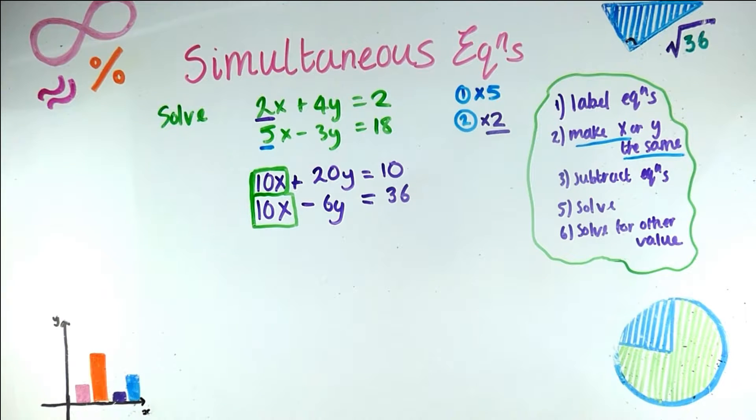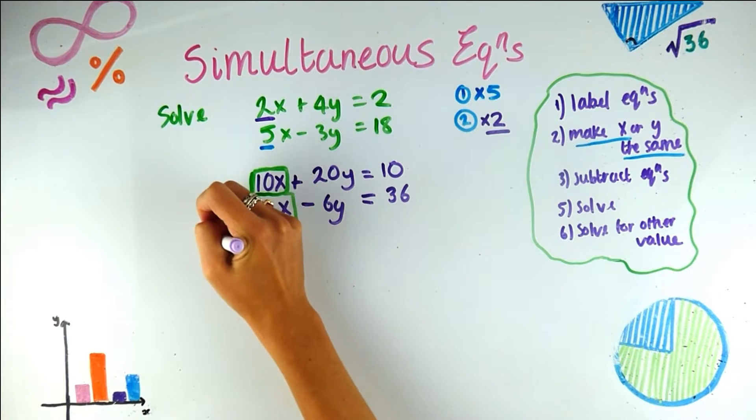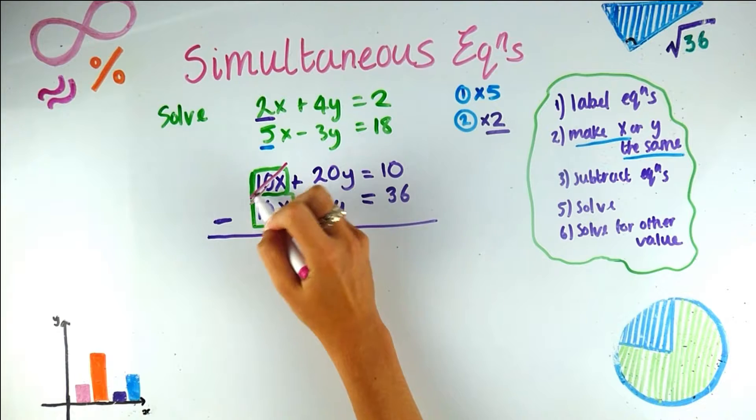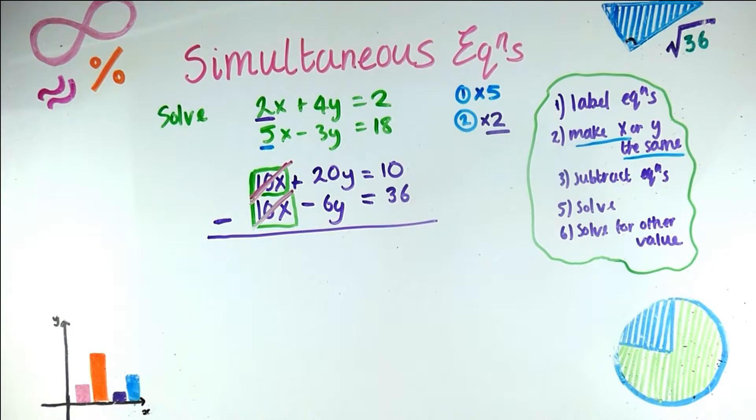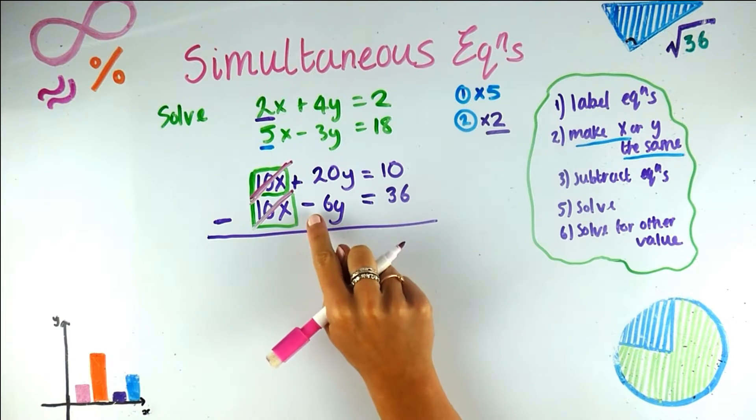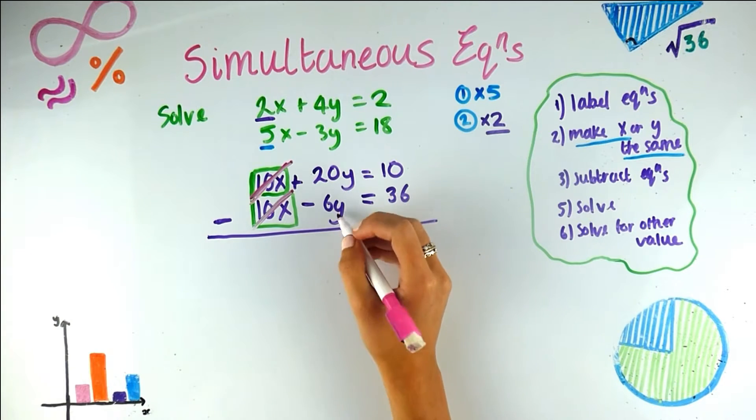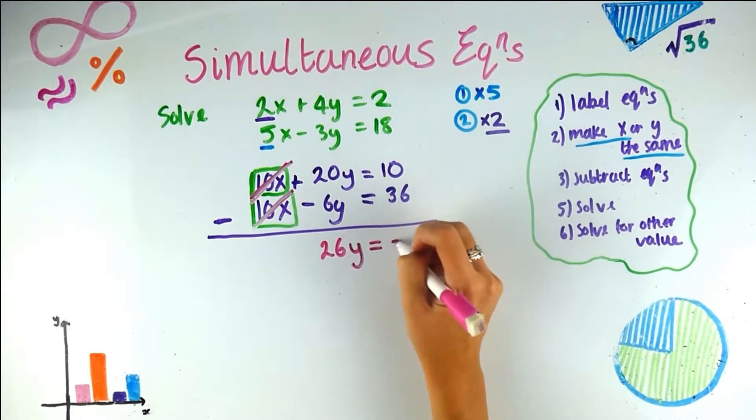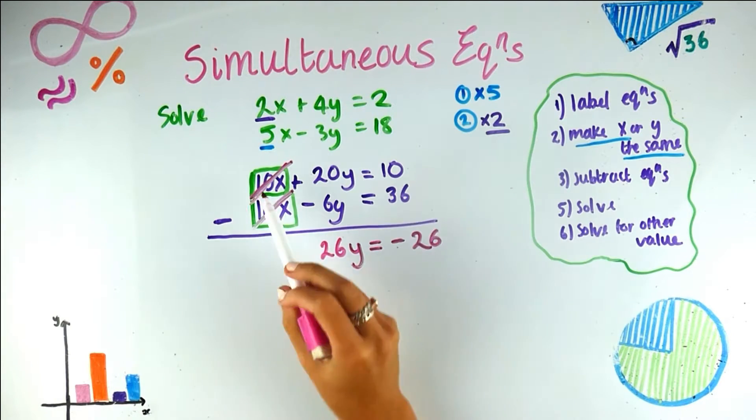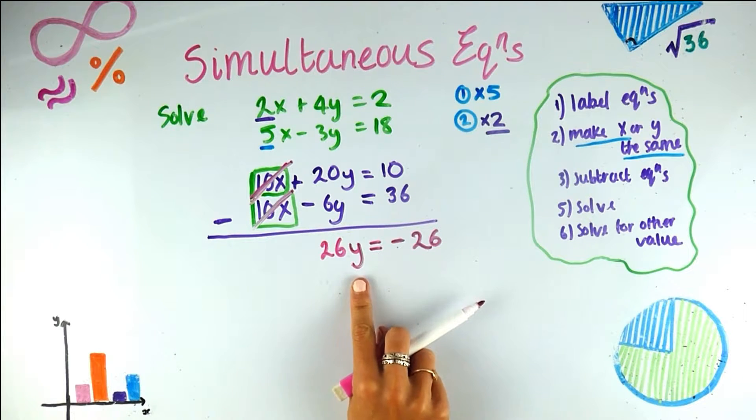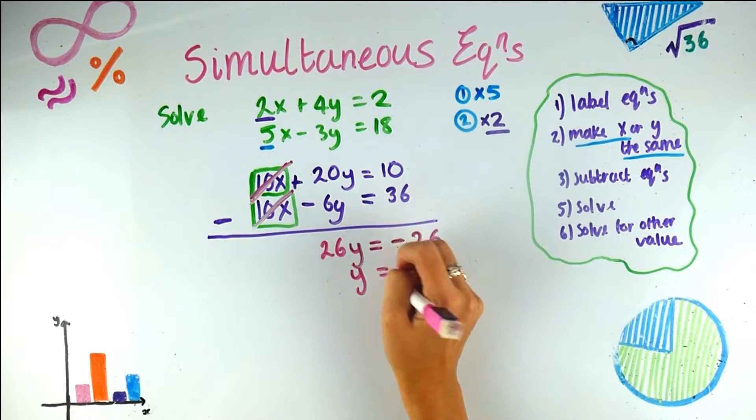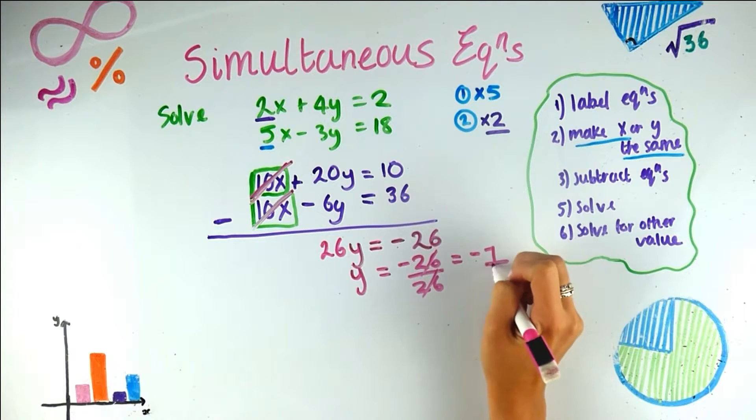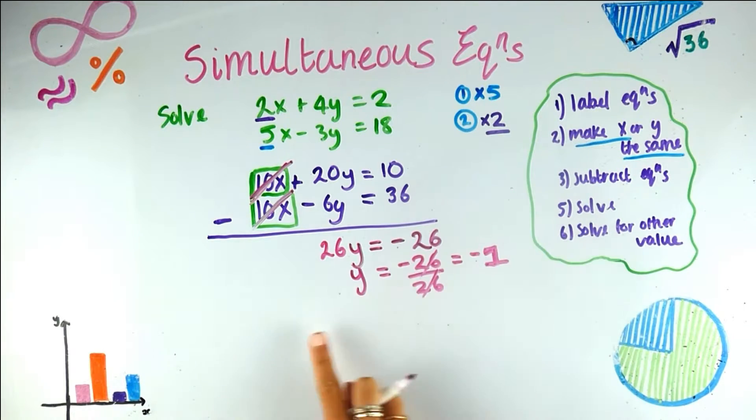Step three, subtract the equations. So we want to subtract these equations. And now you can see the reason we made these x's the same. So if we do 10x minus 10x, they just disappear. And that is the reason for making them the same. We're getting rid of the chance of having an x in our equation. 20y minus minus, so be careful, minus minus 6y. So 20y plus 6y is 26y. Equals, and 10 minus 36 is minus 26. So we made the x's the same. So when we subtract them, we get rid of them. And now we only have one unknown in our equation, which is what we're used to dealing with. So y equals, I'm going to take this 26 over the other side, so we divide by 26. And then that is, they cancel to give minus 1. So we've subtracted the equations, and now we've done step five automatically and solved.